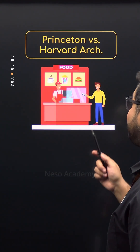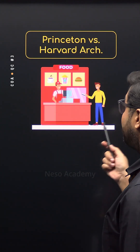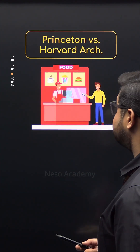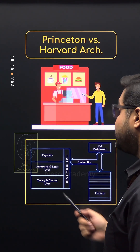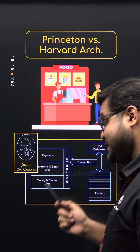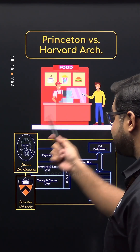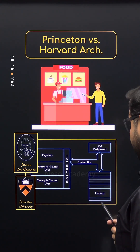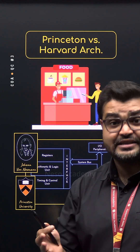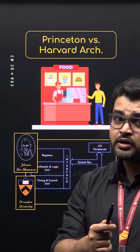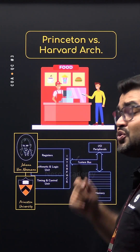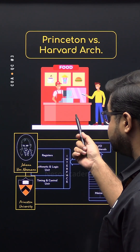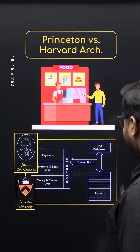Imagine this: you are at a fast food restaurant and there is a single counter where you place your order and also pick up your food. The situation here is similar to Princeton architecture, proposed by Johann von Neumann, who worked at Princeton. It uses a single bus and memory to handle both instructions — that is your order — and data, that is your food. Simple, but it means you might need to wait longer during busy hours because everything goes through that single counter, causing the infamous von Neumann bottleneck.